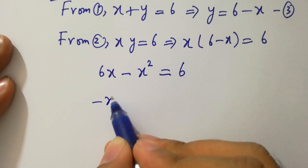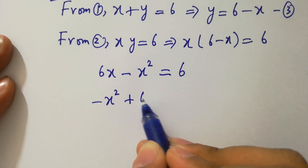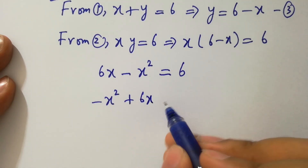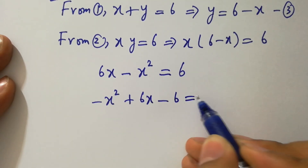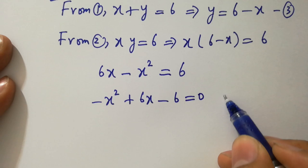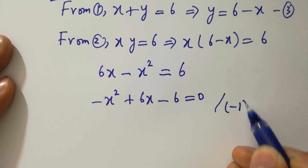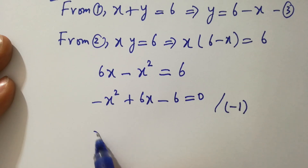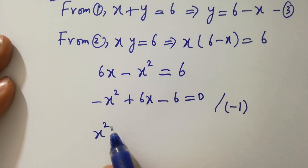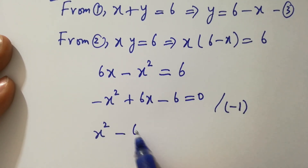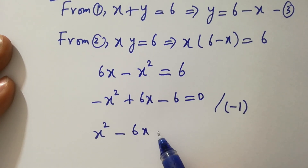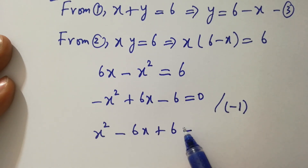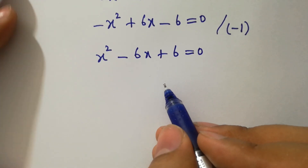Expanding: 6x minus x squared equal to 6. Rearranging: minus x squared plus 6x minus 6 equal to 0. Dividing both sides by minus 1 gives x squared minus 6x plus 6 equal to 0.